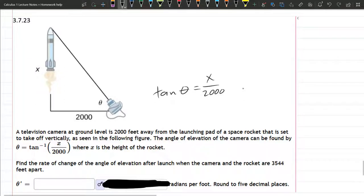They do tell us 3,544 feet is when the camera and the rocket are 3,544 feet apart. You want to be careful because that's not the x measurement. That's the distance between the camera and the rocket, which is also changing. So we could call it hypotenuse, and just remember that number is changing. So that'll come back later.